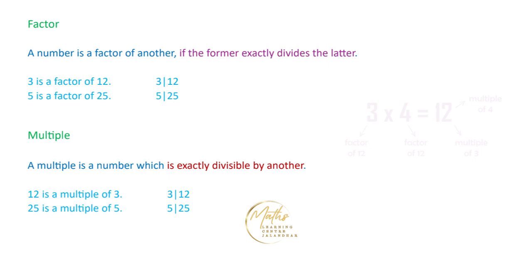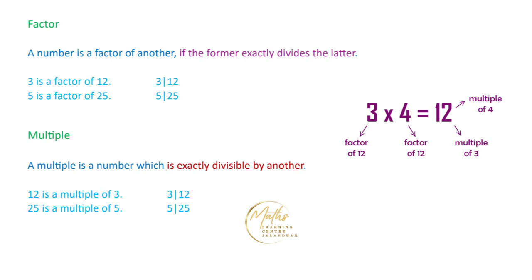If we consider 3 into 4 is equal to 12, then 3 is a factor of 12 and 4 is also a factor of 12. Since 3 divides 12 and 4 divides 12, we say 12 is a multiple of 3 and 12 is a multiple of 4. These are the terms factor and multiple.